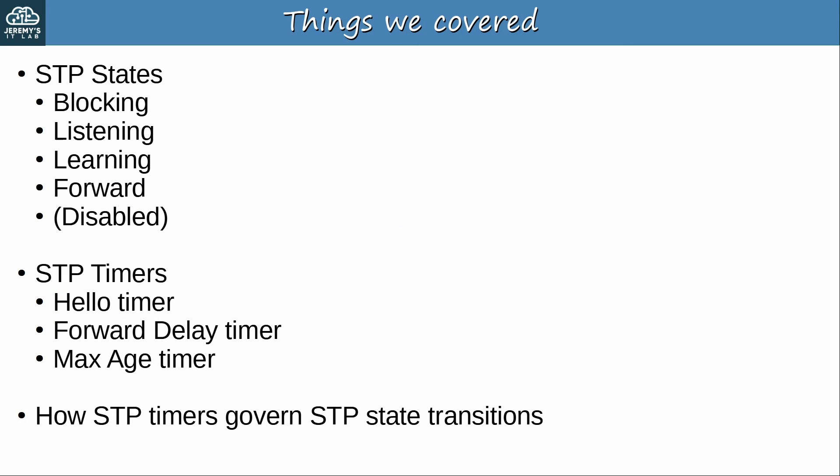Here's what we covered in this video, the STP states and timers, and we also looked at how the STP timers govern STP state transitions, how the forward delay timer governs transitions to the forwarding state, and how the max age timer governs how quickly a switch reacts to a change in the topology. Although we covered these topics in the CCNA, we did cover some more details in this video, so hopefully you learned something new. Now let's do a quiz to test your understanding.